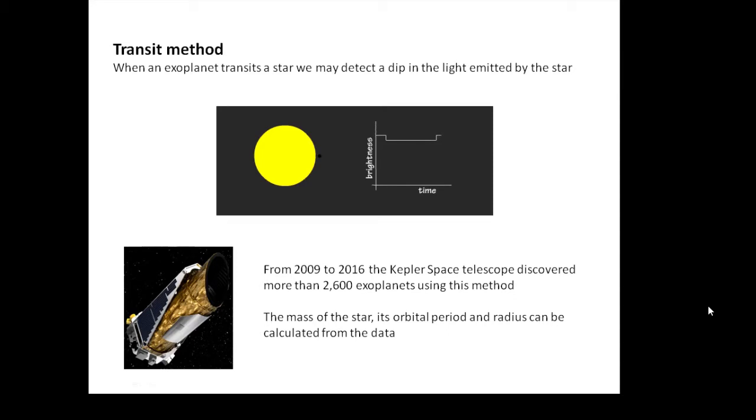Later on in Topic 13 we'll talk more about light curves, but the amount of light we get coming from the star is a little bit less as the planet goes in front of it. The Kepler space telescope was sent up to look at the light curves of lots of different stars and managed to discover about 2,600 exoplanets using this method. You can work out the period, the mass of the star, all kinds of stuff from this light curve.